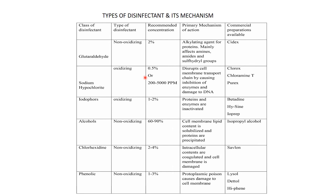Coming to the types of disinfectants and their mechanisms: glutaraldehyde — usually used at a concentrated formulation — is a non-oxidizing disinfectant. Its primary action is as an alkylating agent for proteins, mainly affecting amines, amides, and sulfide groups. A commercial example is Cidex.